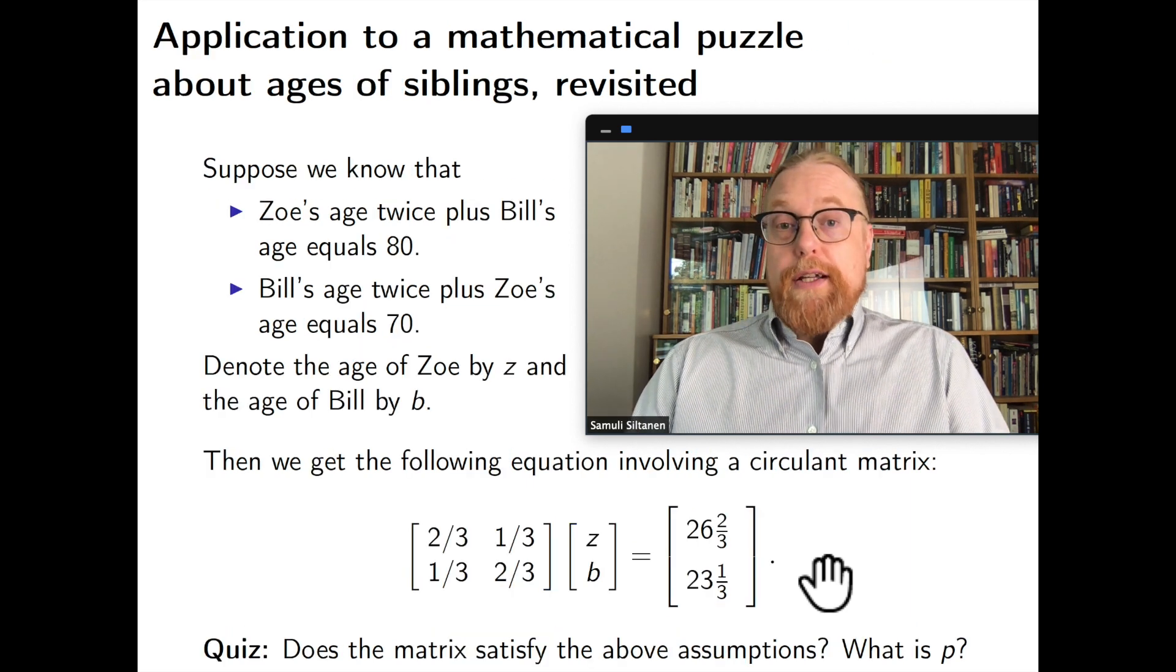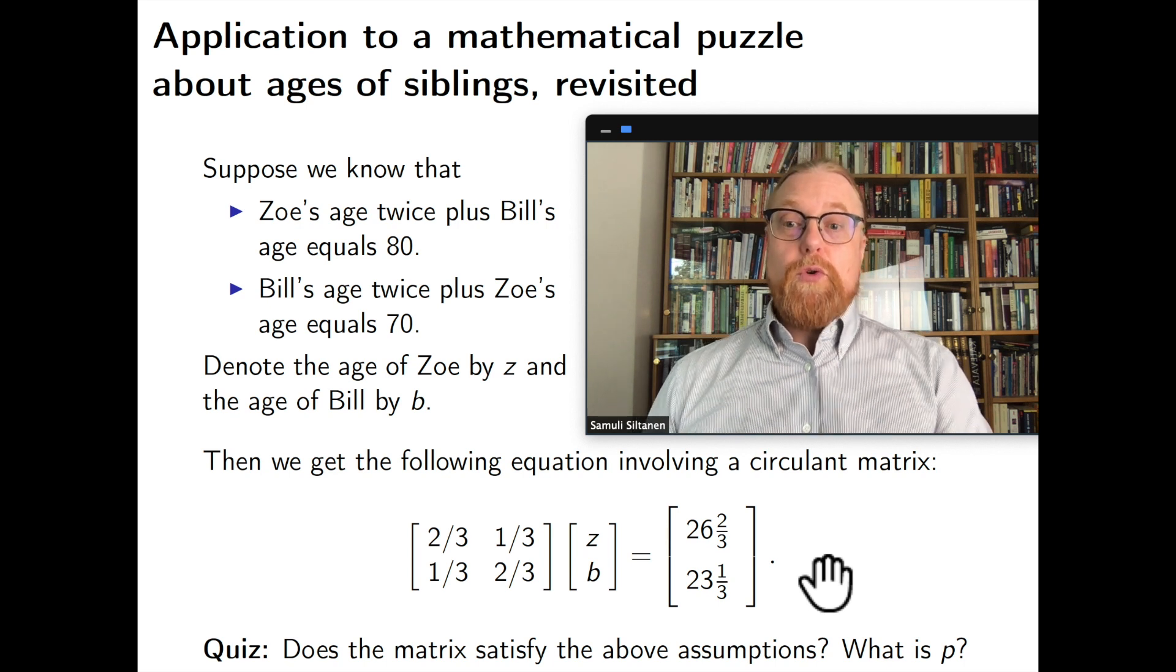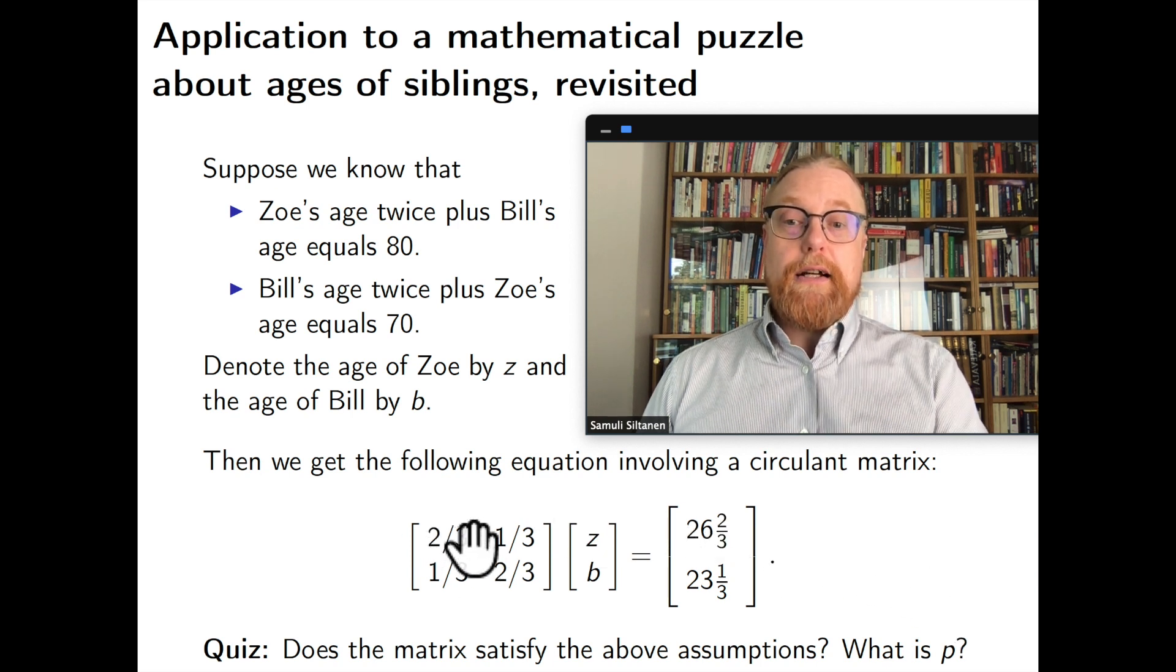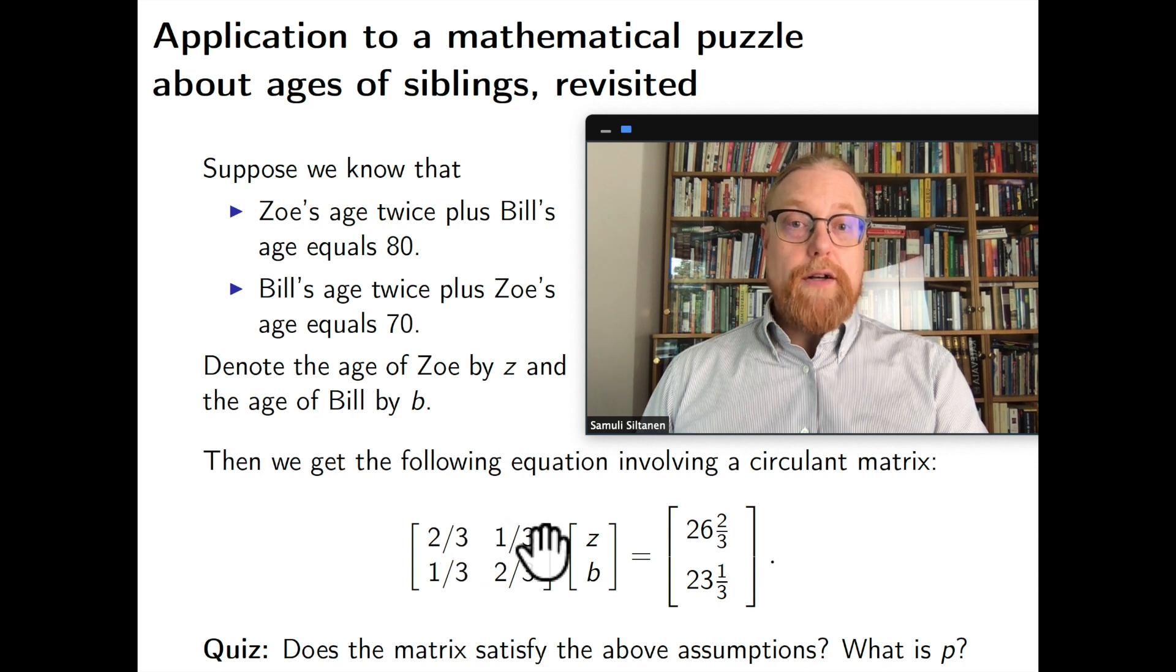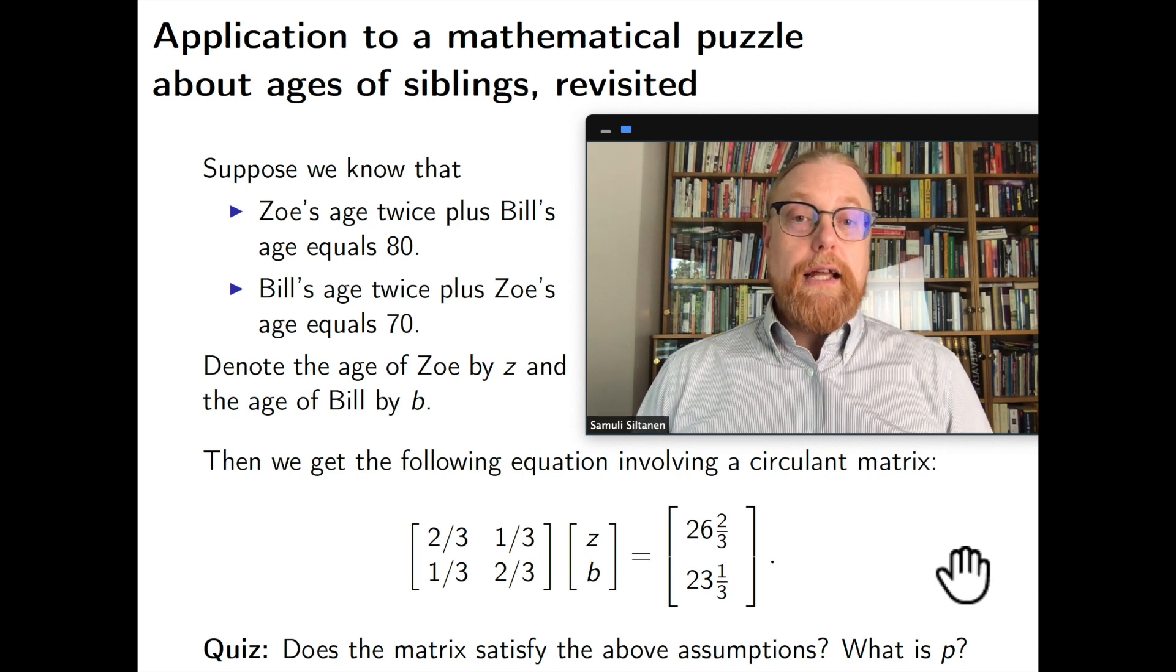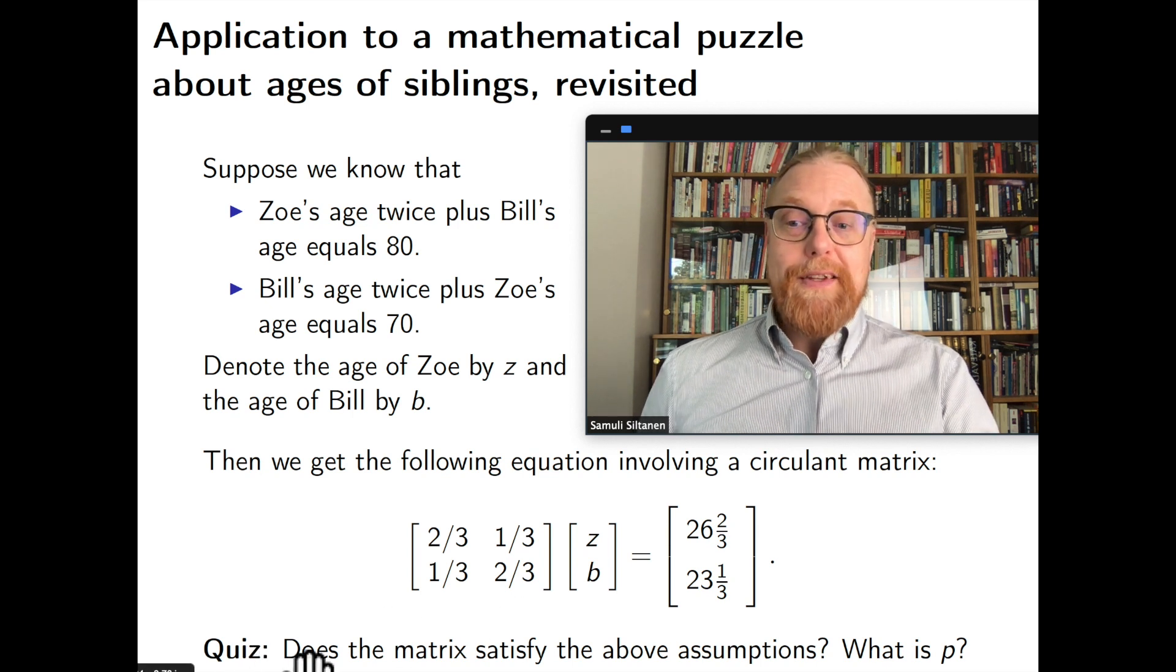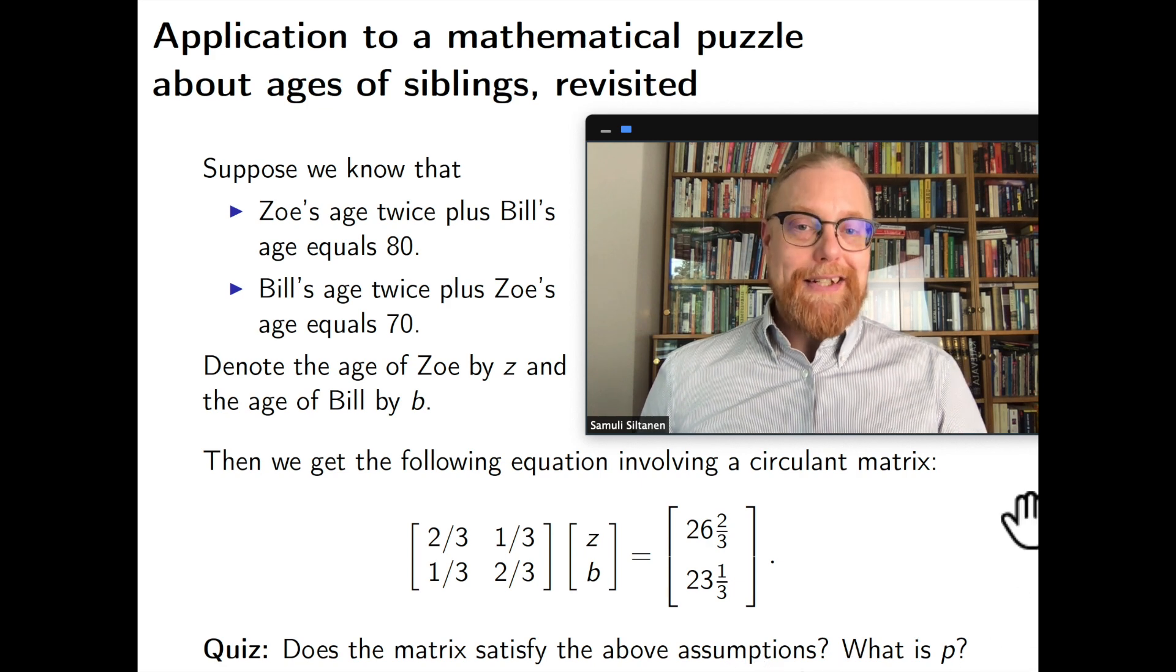So we have p here and since the other filter elements need to sum up to one there is no other chance for this element to be than 1 minus p. So we are actually looking at matrices that have this very specific form and for deconvolution which is kind of recovering the original signal from the filtered one, for that one we are interested in the inverse of this matrix. So let's write our puzzle in the form that satisfies these assumptions. So we divide both sides of the equation by three.